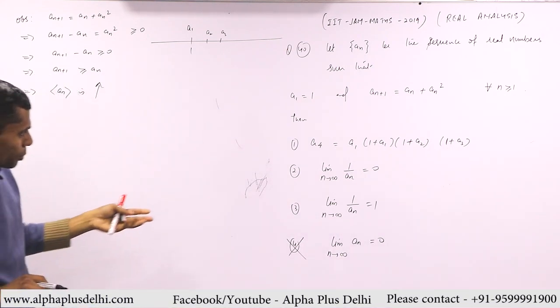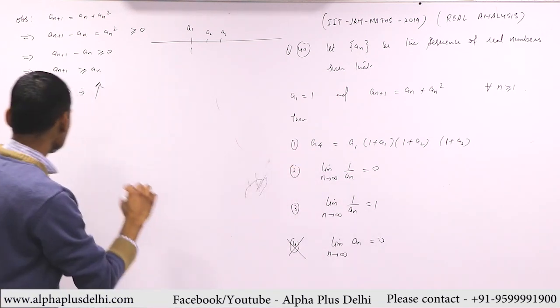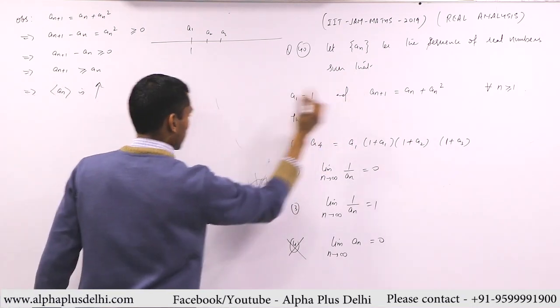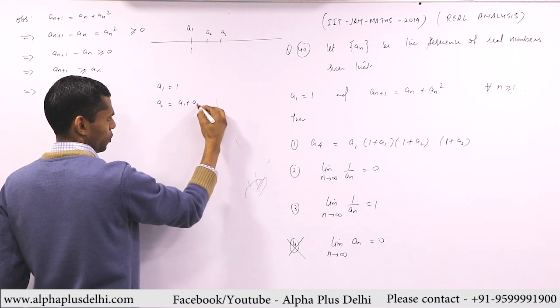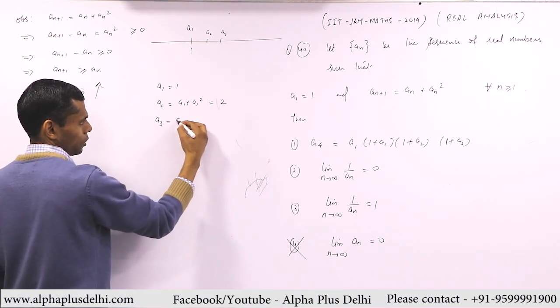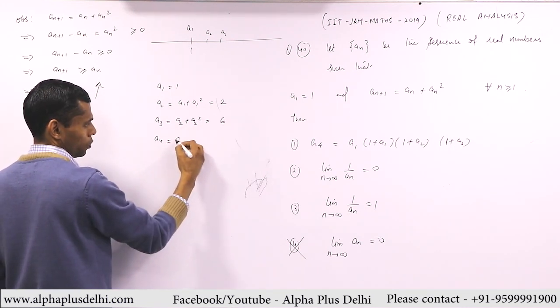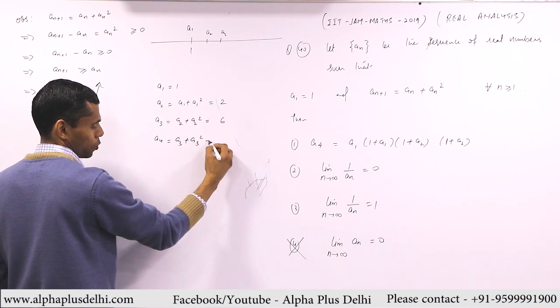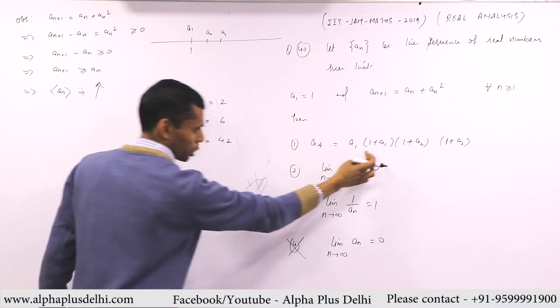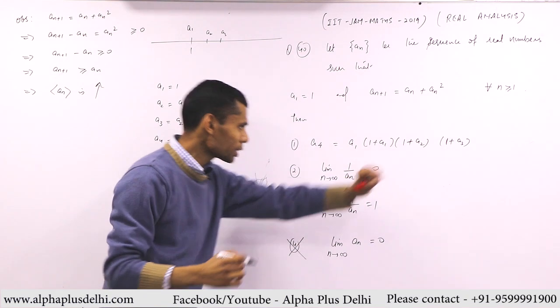Now the rest of the parts. In all of these you should calculate two or three terms. Since the fourth term is being asked, let's see. What is a_1? a_1 is 1. What is a_2? a_2 is a_1 + a_1^2, so that is 1 + 1, that means 2. What is a_3? a_2 + a_2^2, that is 2 + 4, that means 6. What is a_4? a_3 + a_3^2, so this is 6 + 36, that means 42. You can immediately attempt this. a_4 is 42.